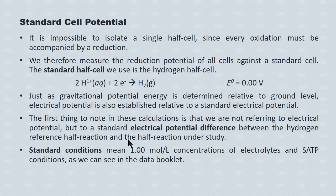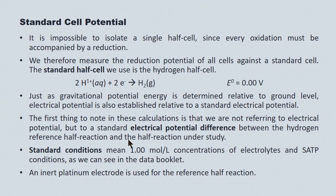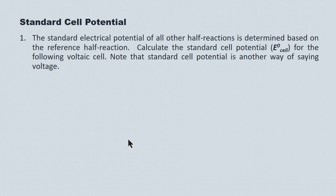Standard conditions mean one mole per liter concentrations of any electrolytes and SATP conditions of temperature and pressure: 25 degrees Celsius and 100 kilopascals pressure. We use an inert electrode — typically platinum for the hydrogen half-reaction, because there's no way to convert hydrogen into a solid substrate to perform the function of the electrode. The standard cell electrical potential of all other half-reactions is determined based upon this reference half-cell. Standard cell potential is simply another way of saying voltage — those are the units for standard cell potential.